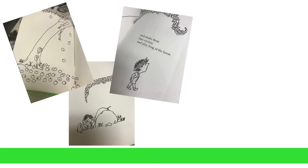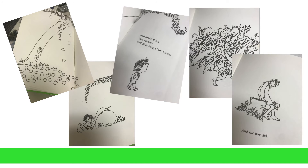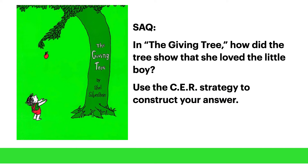The story goes on to show us many examples of things the tree did for the little boy as he grew into a man. Throughout the boy's entire life, the tree gives selflessly to the boy, and we read that doing all of these things made the tree happy. So a short answer question about this story might read something like this: In The Giving Tree, how did the tree show that she loved the little boy? And in this response, we're going to use the CER strategy to construct our answer.